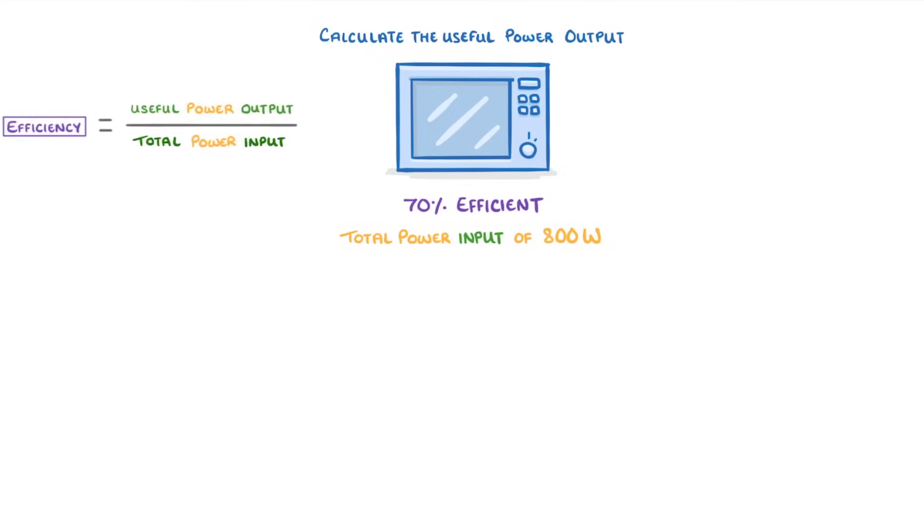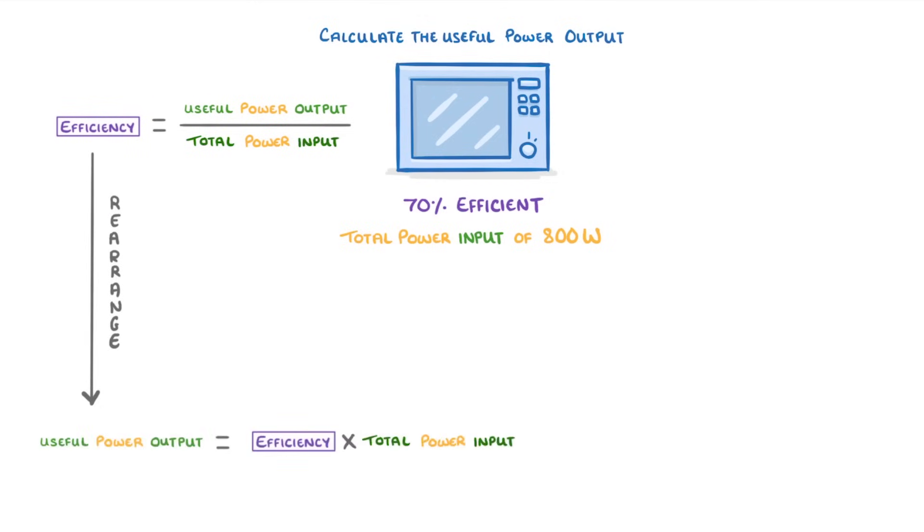First, we need to rearrange the efficiency equation to get useful power output by itself. We also need to convert the efficiency into a decimal by dividing 70% by 100 to give 0.7. Finally, we plug our values into the equation: 0.7 times 800 watts gives us a useful power output of 560 watts.